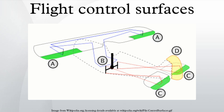The vertical axis passes through an aircraft from top to bottom. Rotation about this axis is called yaw.